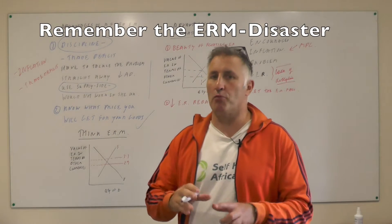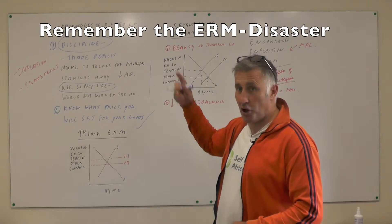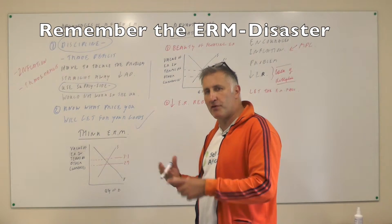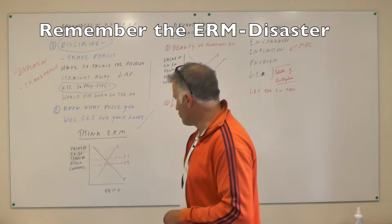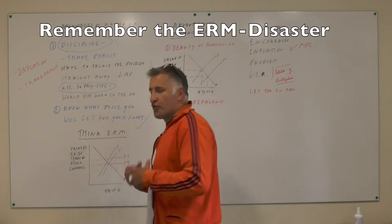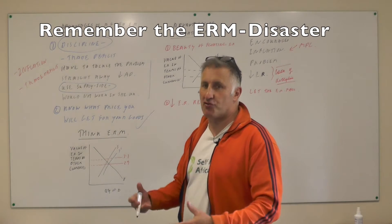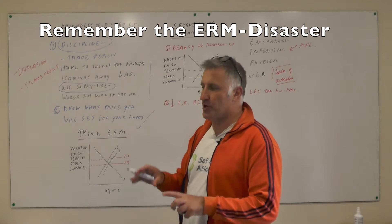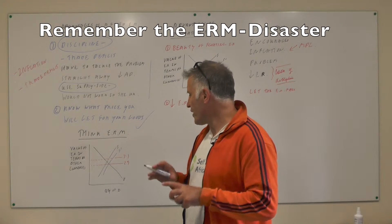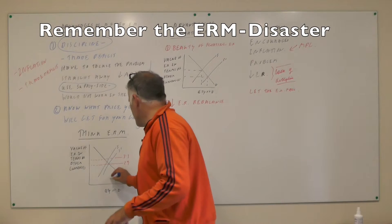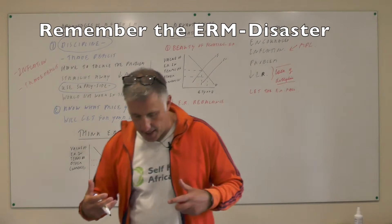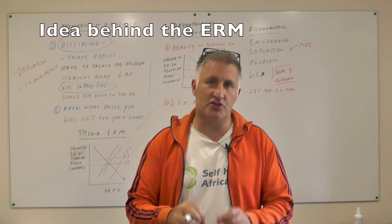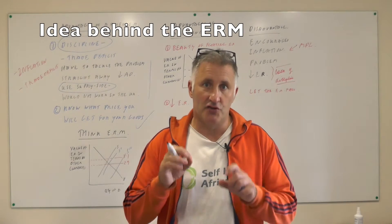A fixed exchange rate makes you tackle problems straight away. Going back to the exchange rate mechanism — the last time we had a semi-fixed exchange rate here — we had a trade deficit, so therefore we had to increase the demand for sterling. So therefore we had to have high interest rates to attract hot money into the UK. But the speculators knew we couldn't survive because they knew our trade deficits were too much, so eventually they just kept on selling sterling, and eventually we came out of the exchange rate mechanism, which was a complete disaster for the UK.